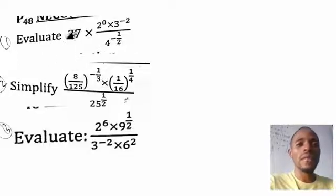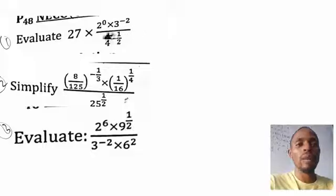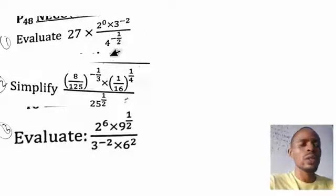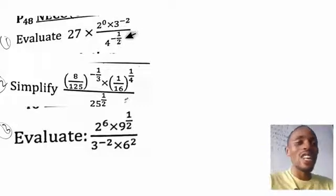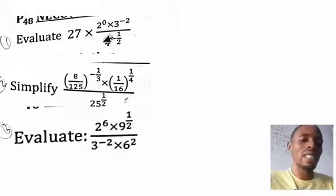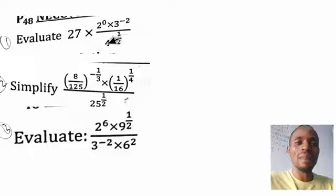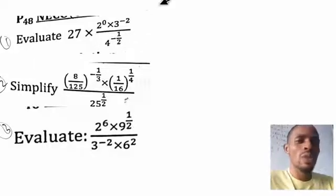So question one: evaluate 27 multiplied by 2 raised to the power of 0, multiplied by 3 raised to the power of minus 2, divided by 4 raised to the power of 1 over 2. This question is very simple. Even if it's the first time you see a question like this, let's solve it.